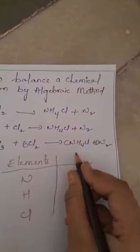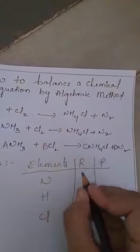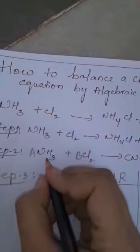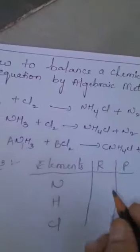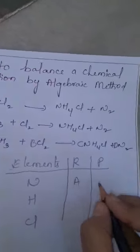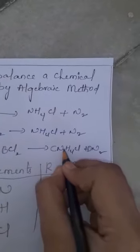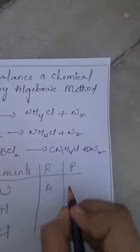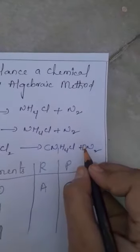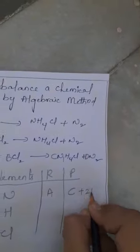Now, we also need to count the atoms which are present on the reactants and product side. For Nitrogen: if there is no number, we keep it as 1. So A into 1 becomes A. On the product side, there is also no number for NH₄Cl, so C into 1 becomes C. For N₂, D into 2 becomes 2D.